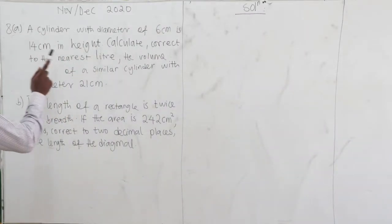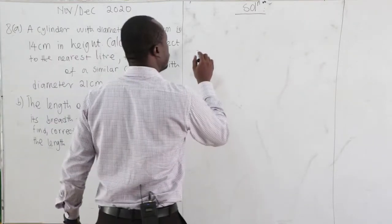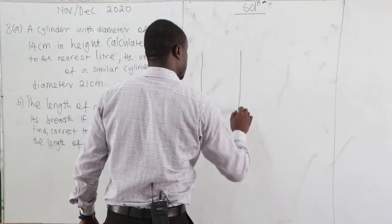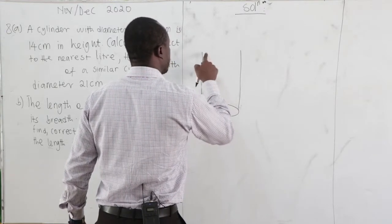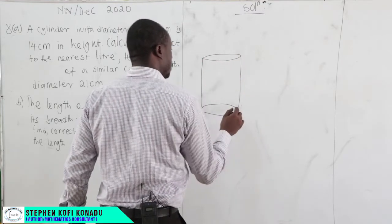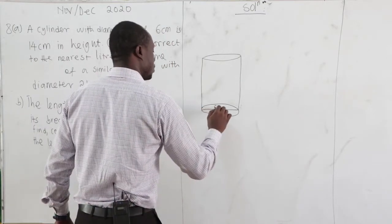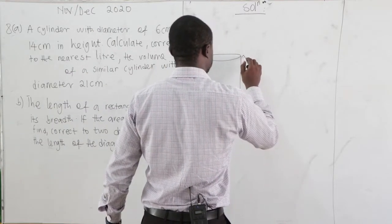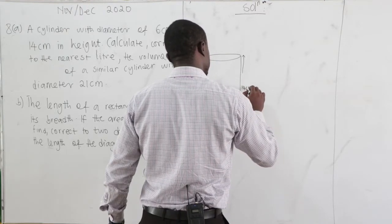So we have a smaller one and then a bigger one. The smaller one has a diameter of 6 cm and a height of 14 cm. We also have a bigger cylinder with diameter 21 cm.